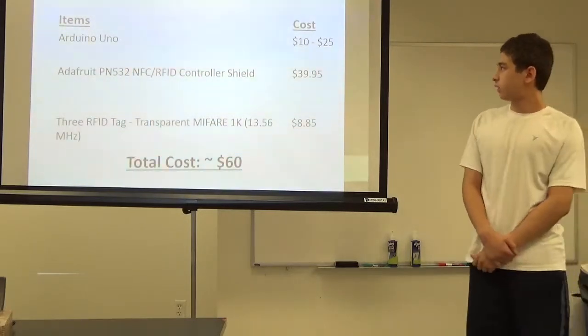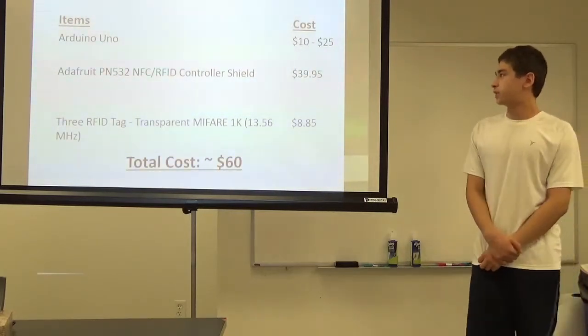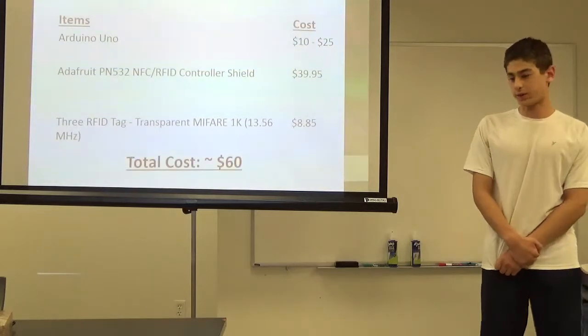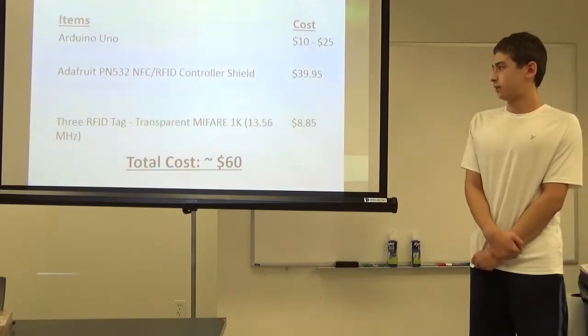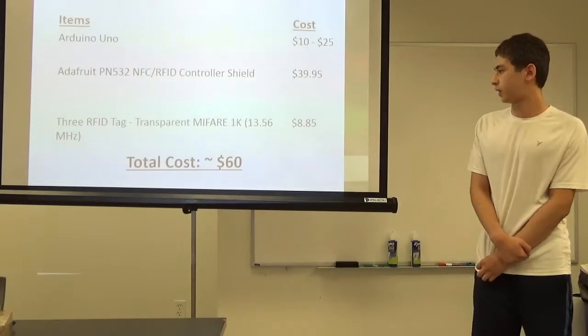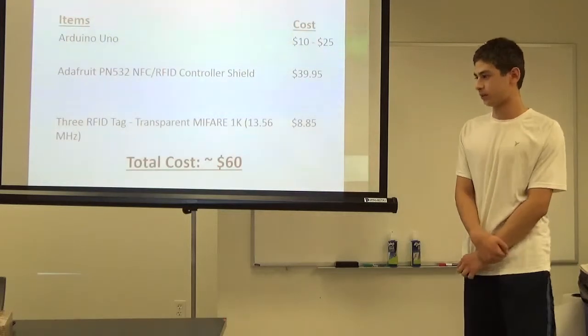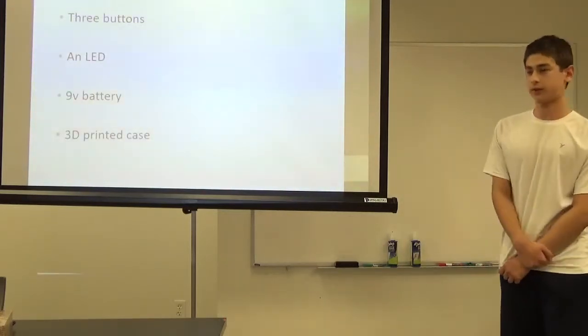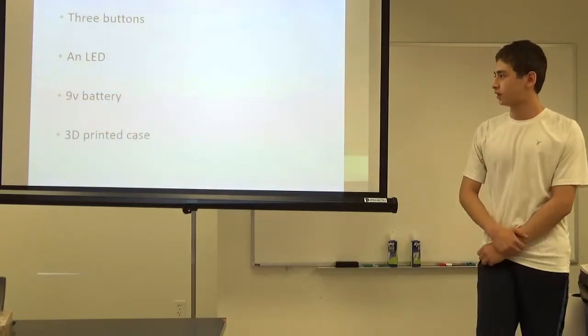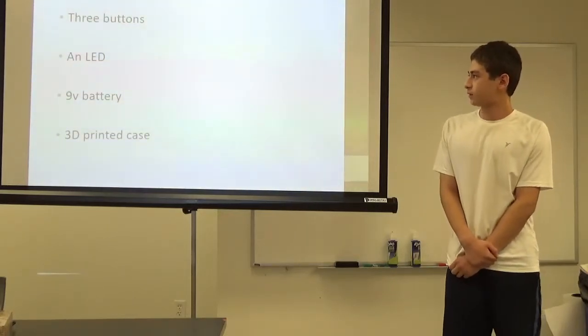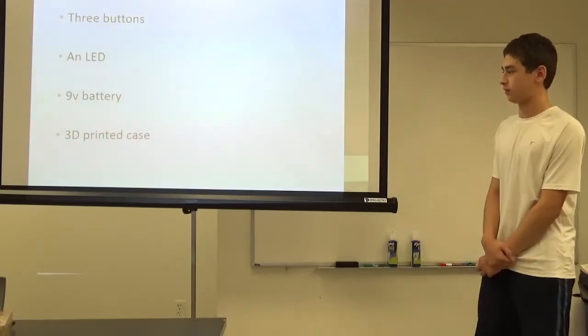My budget is listed here. The first item, which is Arduino Uno, I didn't actually personally purchase it. It was already readily available in the room, but it ranges from $10 to $25. And then there's the Adafruit RFID shield, which is $40. And I ordered three RFID tags to test with for $8.85. It came up to approximately $60. And these were items that weren't priced because you can't buy them separately: buttons, LED, battery, and a 3D paper case.